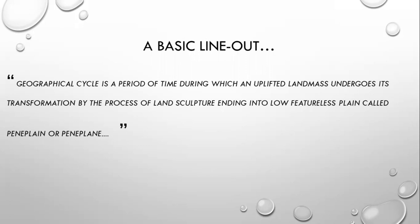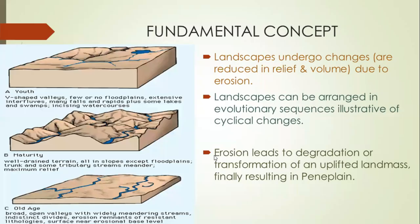According to Davis, the geographical cycle is a period of time during which an uplifted landmass undergoes its transformation by the process of land sculpture, ending into a low, featureless plane called the peneplain. There were some fundamental concepts underlying this model.